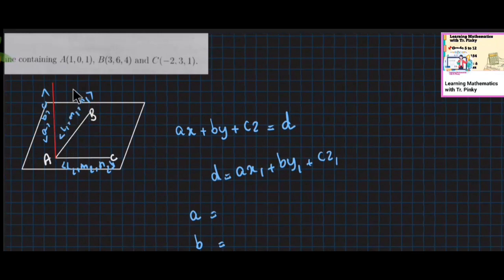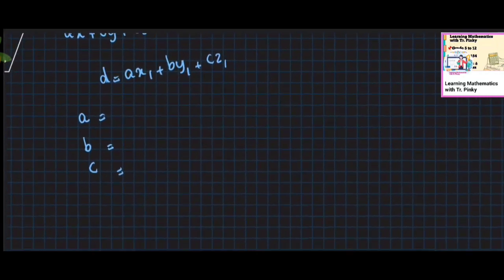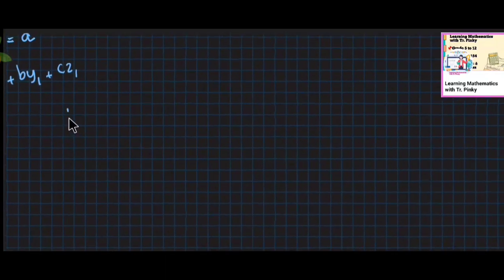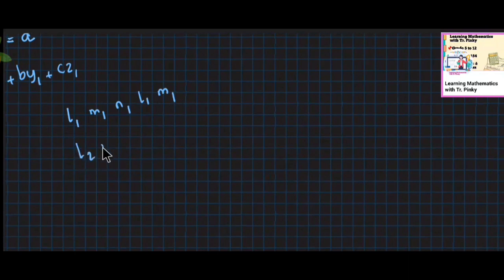We found the equation A plus L1 plus L2, B plus M1 plus M2, and C plus N1 plus N2. Now we will get the direction vectors L1, M1, N1 and L2, M2, N2.